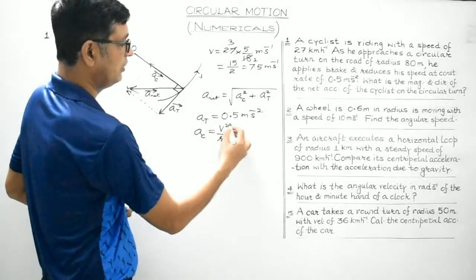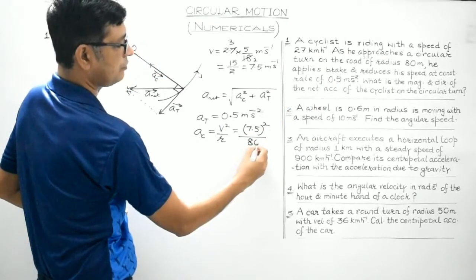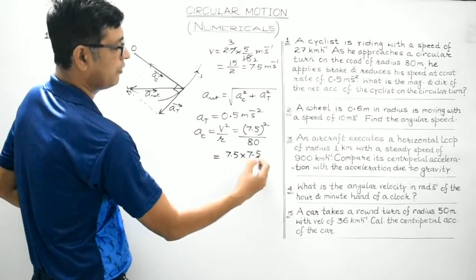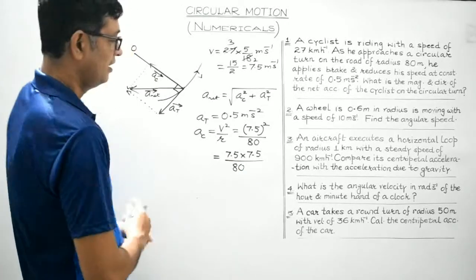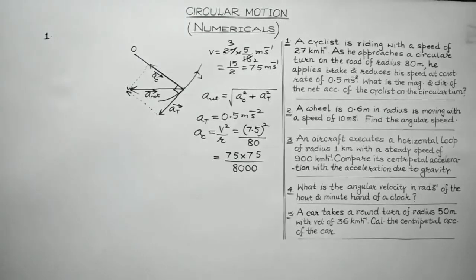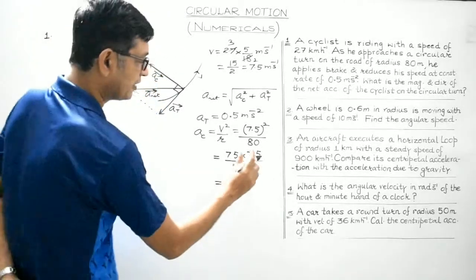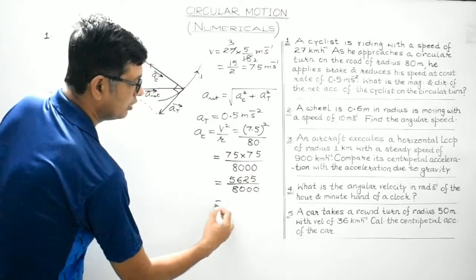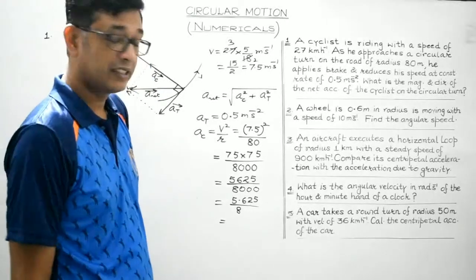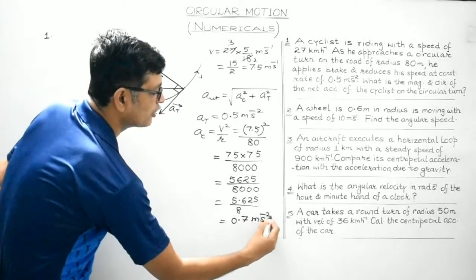Centripetal acceleration is v² by r, that is 7.5² divided by radius 80. So 7.5 × 7.5 divided by 80. That works out to 5.625 divided by 8, which is approximately 0.7 metres per second square.